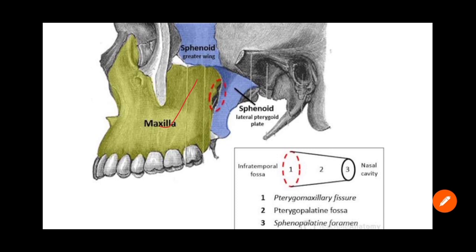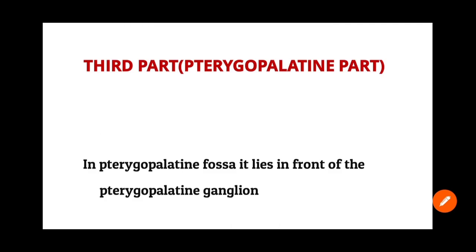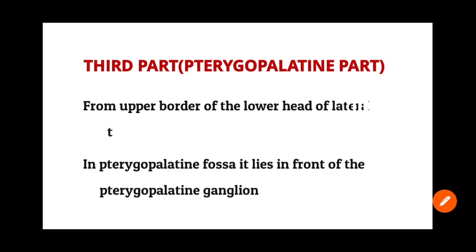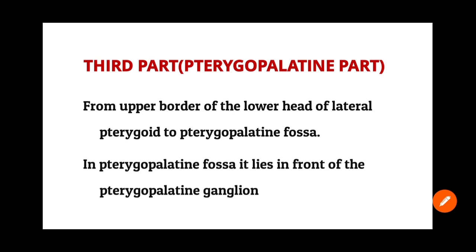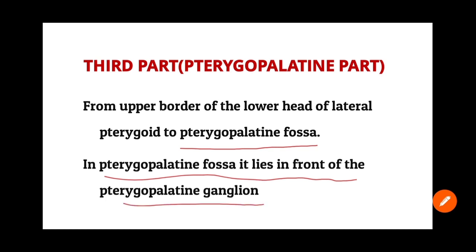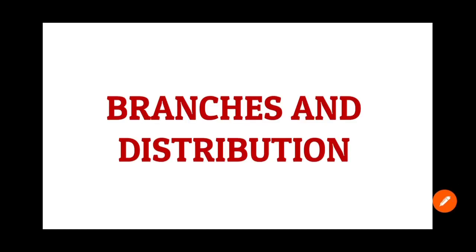The green color is your maxilla and the blue area is your sphenoid bone. The red dotted line area is your pterygo-maxillary fissure. If you insert something into this fissure, it will reach a space below called the pterygopalatine fossa. The third part is also called the pterygopalatine part, running from the upper border of the lower head of the lateral pterygoid to the pterygopalatine fossa, where it lies in front of the pterygopalatine ganglion.